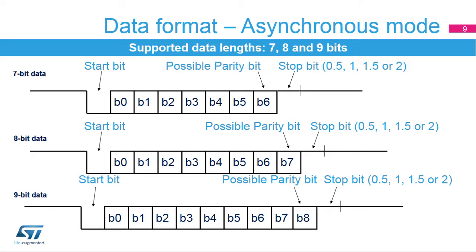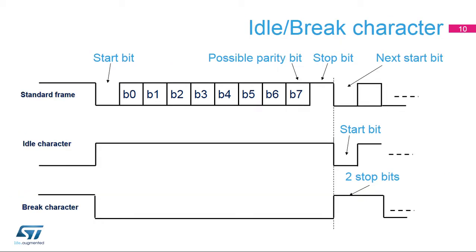The frame format used in asynchronous mode consists of a set of data bits in addition to bits for synchronization and optionally a parity bit for error checking. The USART supports 7-, 8-, or 9-bit data lengths. A frame starts with 1 start bit where the line is driven low for 1 bit period, signaling the start of a frame for synchronization. The start bit is followed by 7-, 8-, or 9 data bits. If parity control is enabled, the parity bit is transmitted as the last data bit and is included in the data length count. Finally, a number of stop bits — 0, 1, 1.5, or 2 — where the line is driven high, end the frame.